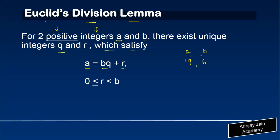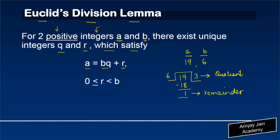Whenever we divide one positive integer by another, either it completely divides or there is a remainder. If I divide 19 by 6: 6 times 3 gives 18, subtract 18 from 19 and I get 1. In mathematical terminology, 1 is the remainder, 3 is the quotient, and 6 is the divisor. In my example, 19 is a, 6 is b, Q is the quotient, and R is the remainder.